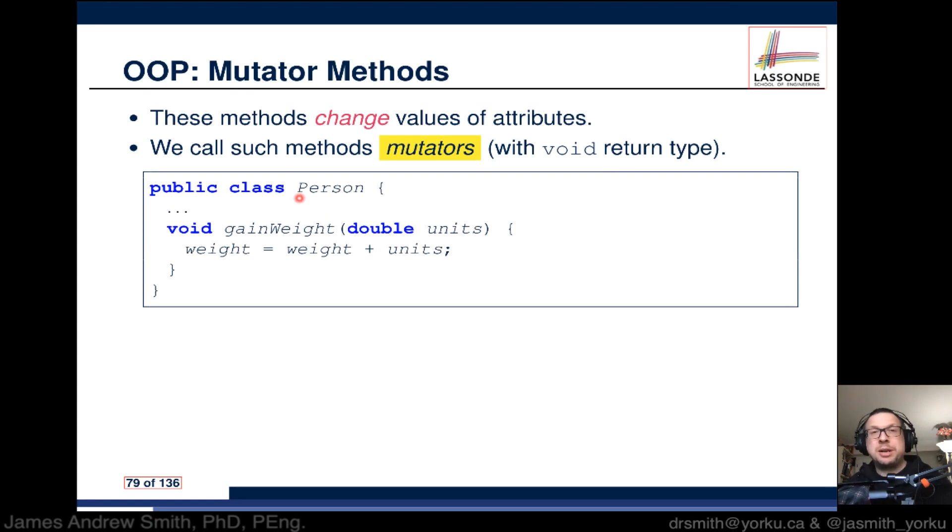Here's an example. We've got a class called Person. Inside of it we've got a method called gainWeight, and it has an input parameter. These units are used in an equation where we update the attribute of the person, their weight, with some value called units.